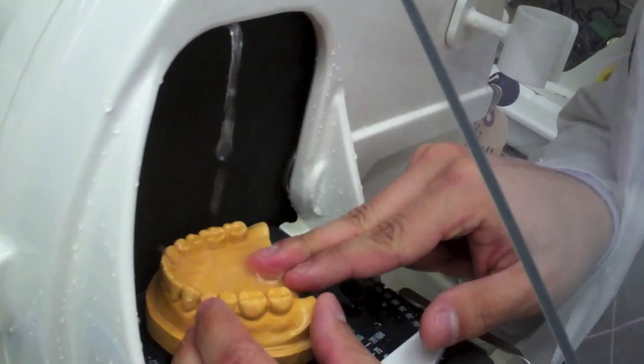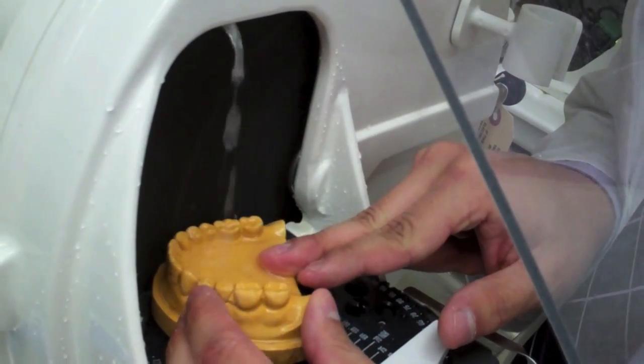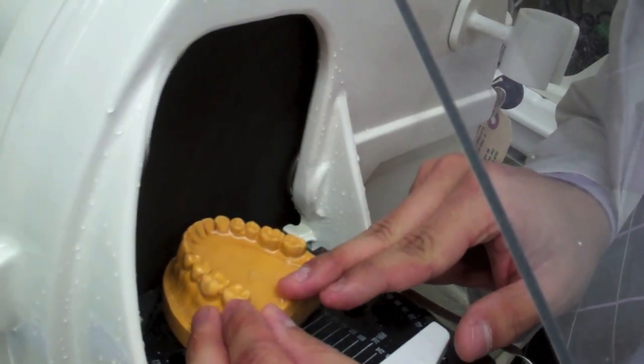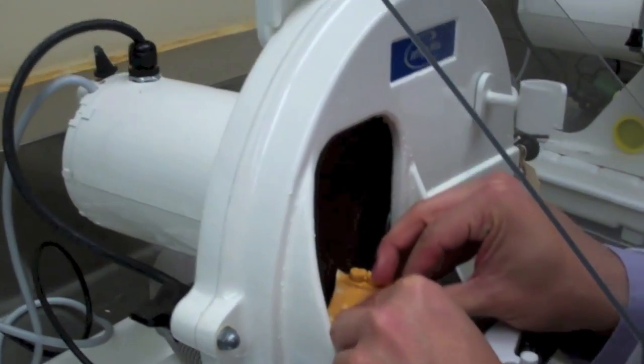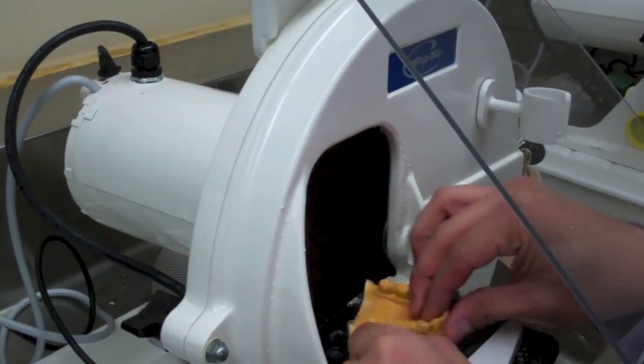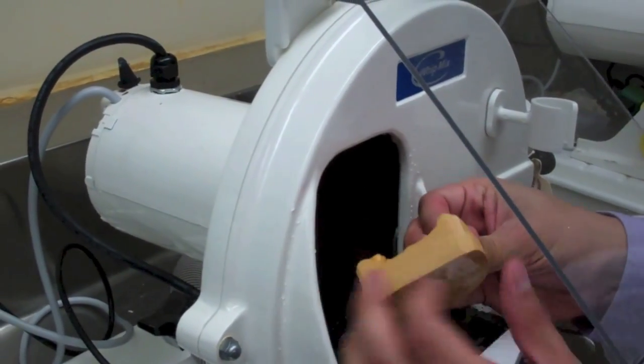A tip to remember is that the amount of pressure applied dictates the speed that the model will be trimmed. Remember to make sure that all sides of the cast are smooth with no sharp edges.